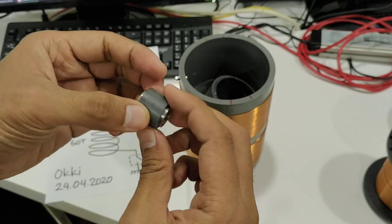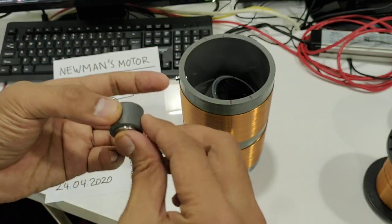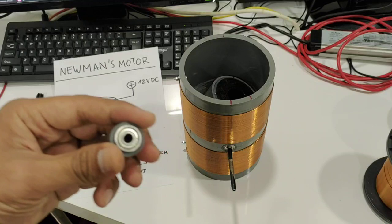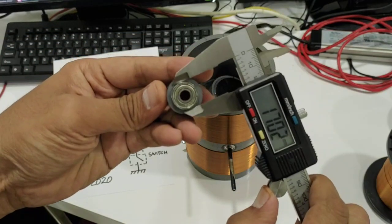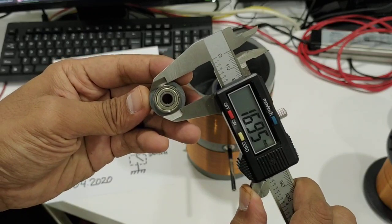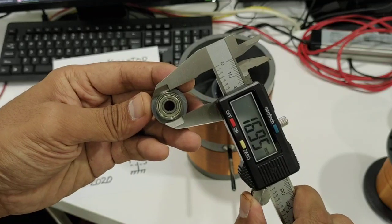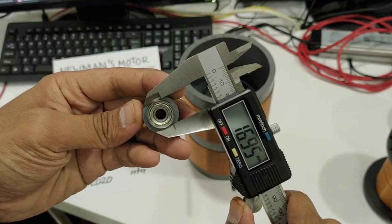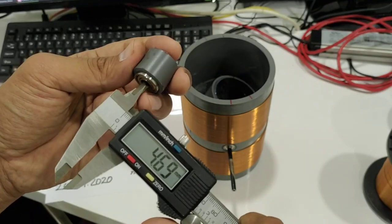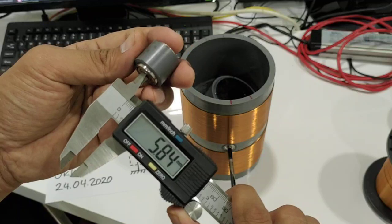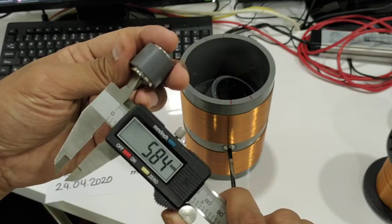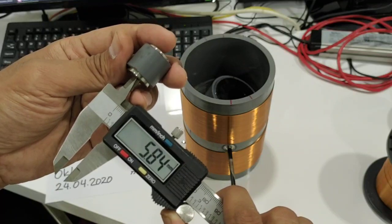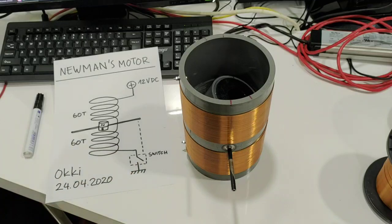Maybe you want to know the measurement of the bearing. This is I think 17 millimeter outside diameter, or 16.95 millimeters, and the inside diameter is actually 6 millimeters, maybe 5.84 millimeters.